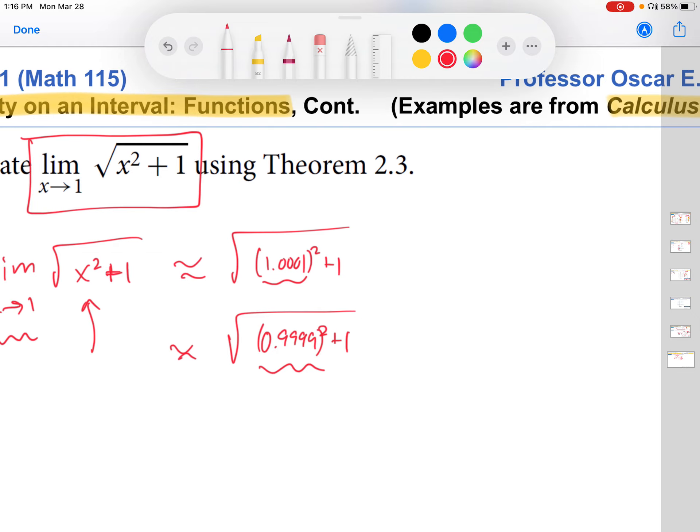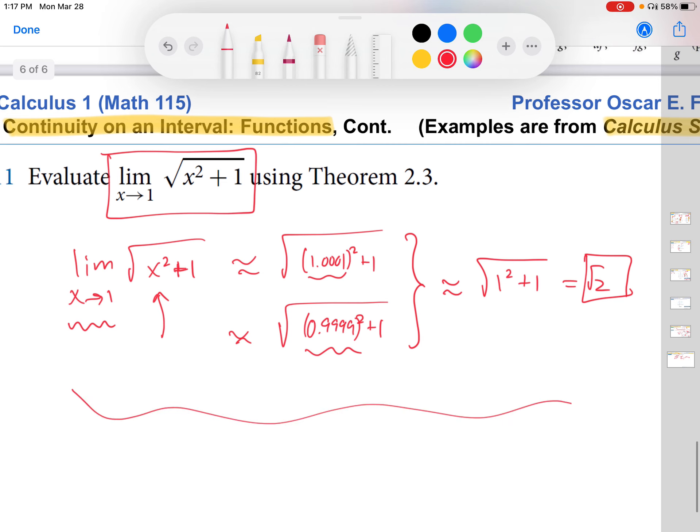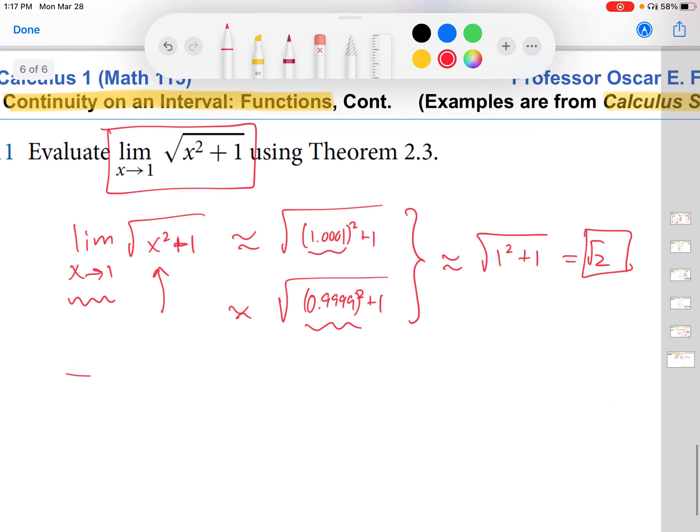And you can see that both of these are approximately square root of 1 squared plus 1, which is square root of 2. So that is what we think the answer is to this limit. You can see that this was very quick, it was very intuitive, and it leaned on what we're thinking and know about the limit. So now let's talk about the more formal way to do this using the theorem, and you'll see that we'll get exactly the same result.